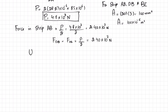Now we will find the maximum strain energy. The total maximum strain energy equals the strain energy in strip AB plus the strain energy in strip DB plus the strain energy in the middle strip BE.